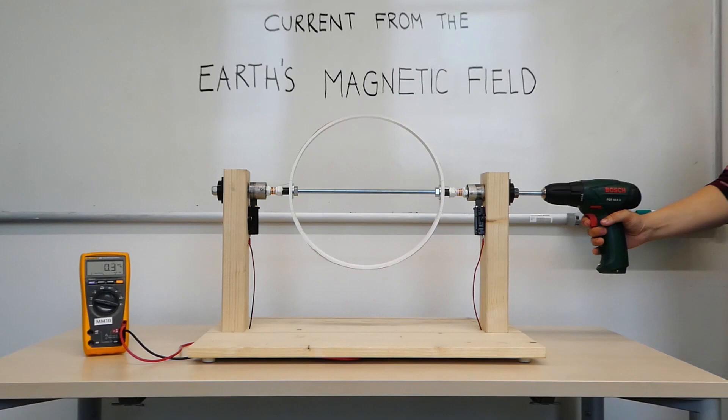In today's experiment, we want to show that it's possible to induct a current from Earth's magnetic field into this solenoid. To do so, we got a drill machine which rotates the reel. Due to the rotation, a current is inducted, which is measured with two slide contacts and displayed on the multimeter.